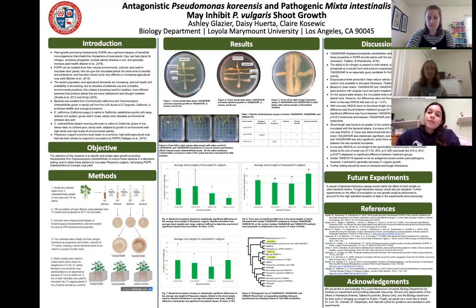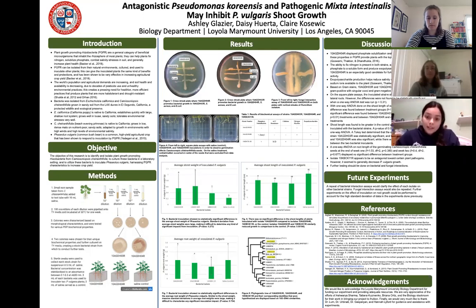The objective of this research was to identify and isolate plant growth-promoting rhizobacteria from Camisoniopsis carinthifolia, to culture these bacteria in a laboratory setting, and to utilize these bacteria to inoculate Phaseolus vulgaris, harnessing PGPR characteristics to increase crop yield.